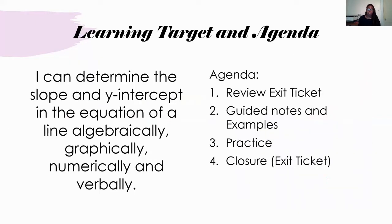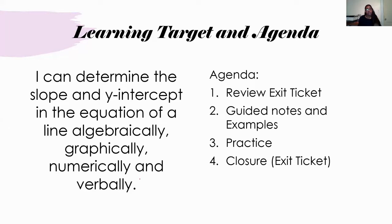So what we're working on today — you should be able to answer this statement: I can determine the slope and Y-intercept in the equation of a line algebraically, graphically, numerically, and verbally. Algebraically, we're actually going to be finding our slope using Y2 minus Y1. Graphically, it's like what we just did — starting at the Y-intercept and using the slope to graph. Numerically, it's looking at a table. And verbally, it's through word problems. Today we're going to focus on the first two: algebraically and graphically.